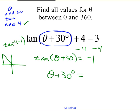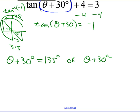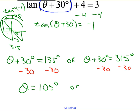Tangent is negative in quadrants 2 and 4 — those give negative slope. With opposite and adjacent the same length, the reference angle is 45°. So the angles are 135° and 315°. That means θ + 30° = 135° or θ + 30° = 315°. Undo the adding 30 by subtracting 30, giving theta equals 105° or theta equals 285°.